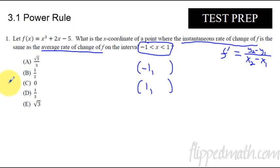Oh, and by the way, this is the same thing as the mean value theorem. This is the mean value theorem. When does the instantaneous rate of change equal the average rate of change?